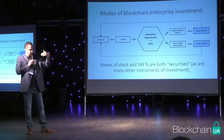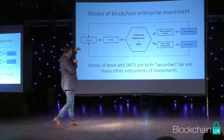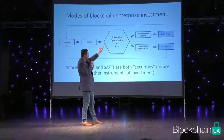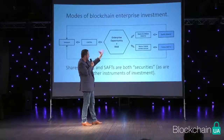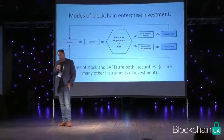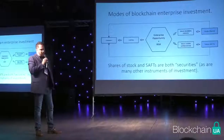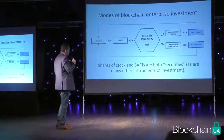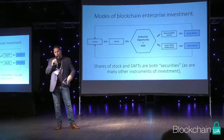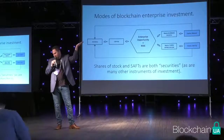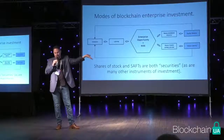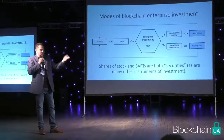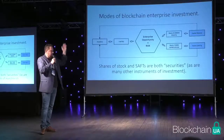Investors put capital in either equity or debt form into the enterprise. If they want to share in profits, they buy stock; if they want interest payments, they buy bonds or debt. Under the new blockchain model it's a little different — people don't necessarily own the underlying company or lend money to it. Instead they buy tokens, or the right to receive tokens at a big discount, in the hopes that the tokens will go up in value over time, and then they can sell them on an exchange for more money. You're not selling equity, you're not selling debt — you're selling tokens.